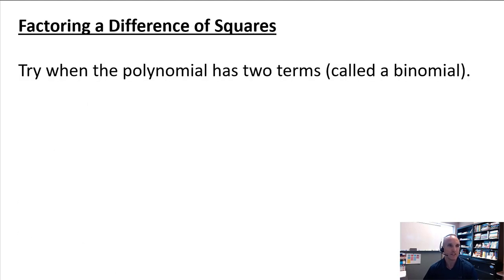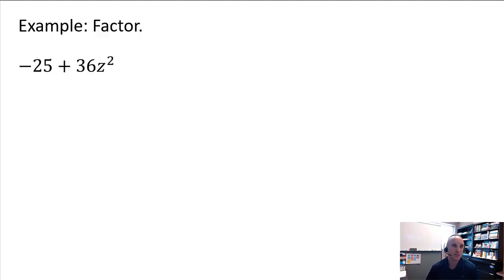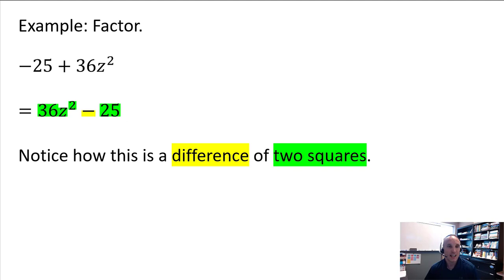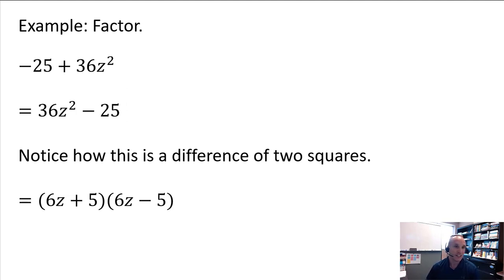The last technique is factoring a difference of squares. We try this whenever we have two terms, a binomial. For example, negative 25 plus 36z squared — we first put it in descending order. We can see it is a difference because of the minus, and it's a difference of two squares: 36z squared and 25. Using conjugates, we factor it as 6z plus 5 times 6z minus 5. Note that 6z times 6z gives 36z squared, and positive 5 times negative 5 gives negative 25.